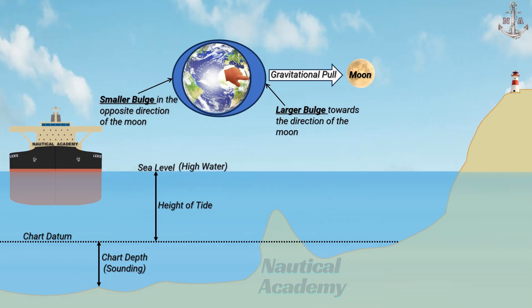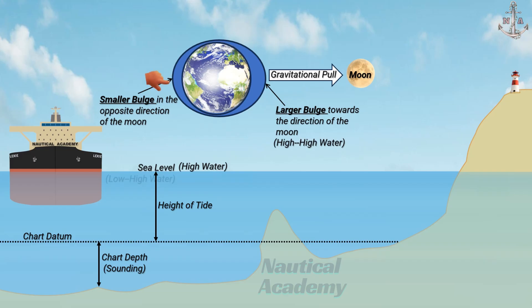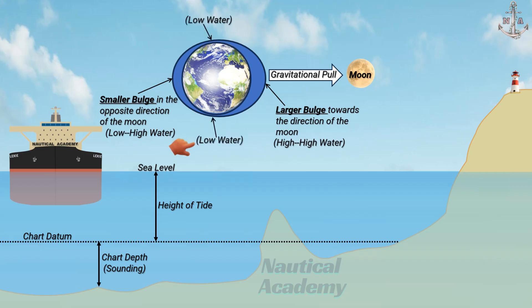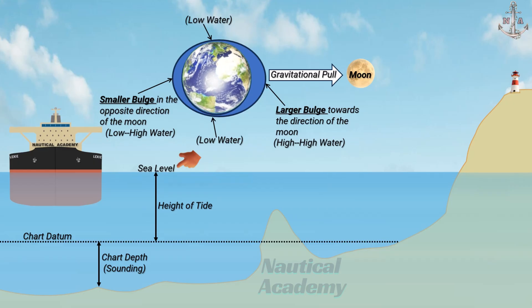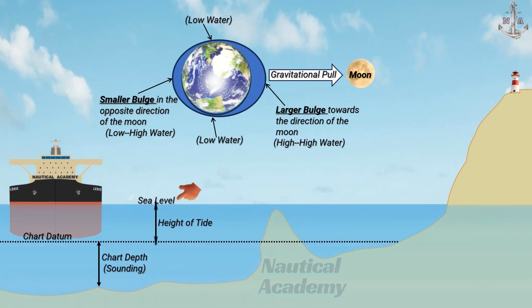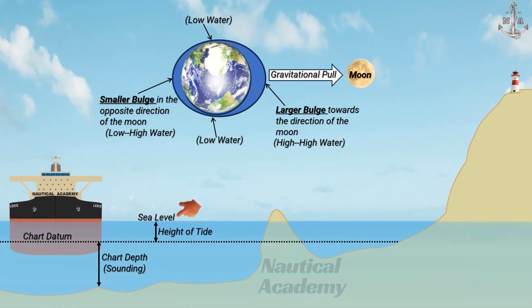The larger bulge, which is closer in line with the Moon, is often referred to as high high water, while the smaller bulge on the opposite side is known as low high water. Meanwhile, the areas of the Earth where the ocean is pulled away in the direction perpendicular to the Moon will experience low water. As the Earth rotates, different locations pass through areas of high and low sea level, experiencing the periodic rise and fall of the water — a phenomenon known as tide.